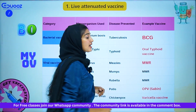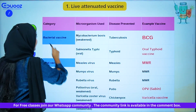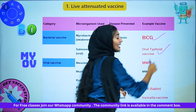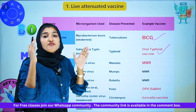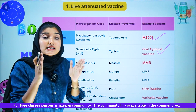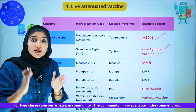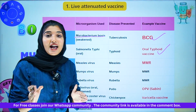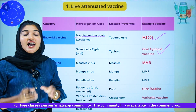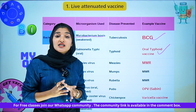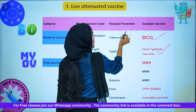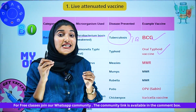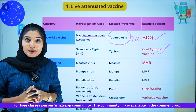We have two types of bacterial live attenuated vaccines. First is the BCG vaccine and the oral typhoid vaccine. For the BCG vaccine, the microorganism is the bacteria Mycobacterium bovis. The disease we vaccinate against is tuberculosis (TB). So for TB patients, we give the BCG vaccine.